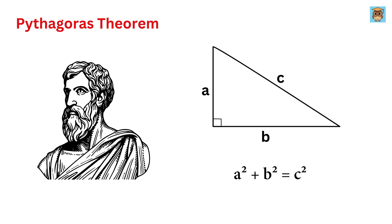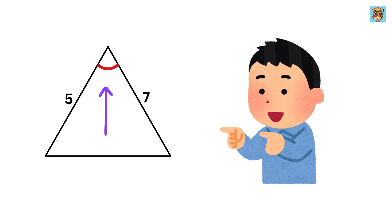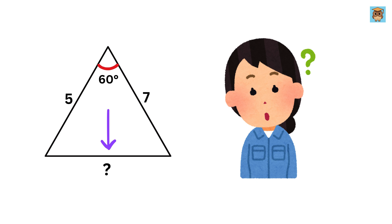However, what happens when in the triangle not a single angle measures exactly 90 degrees? For example, imagine a triangle where this side is of length 5, this side is of length 7, and this angle between these two sides is 60 degrees, and this is not a right triangle. Then can you find the length of this third side?